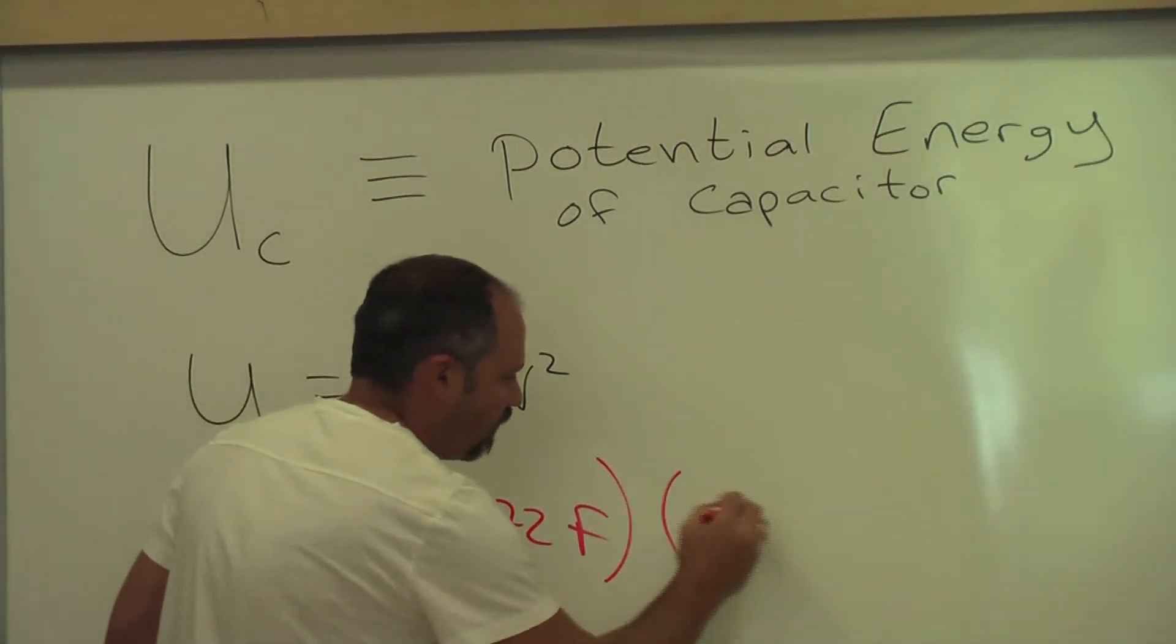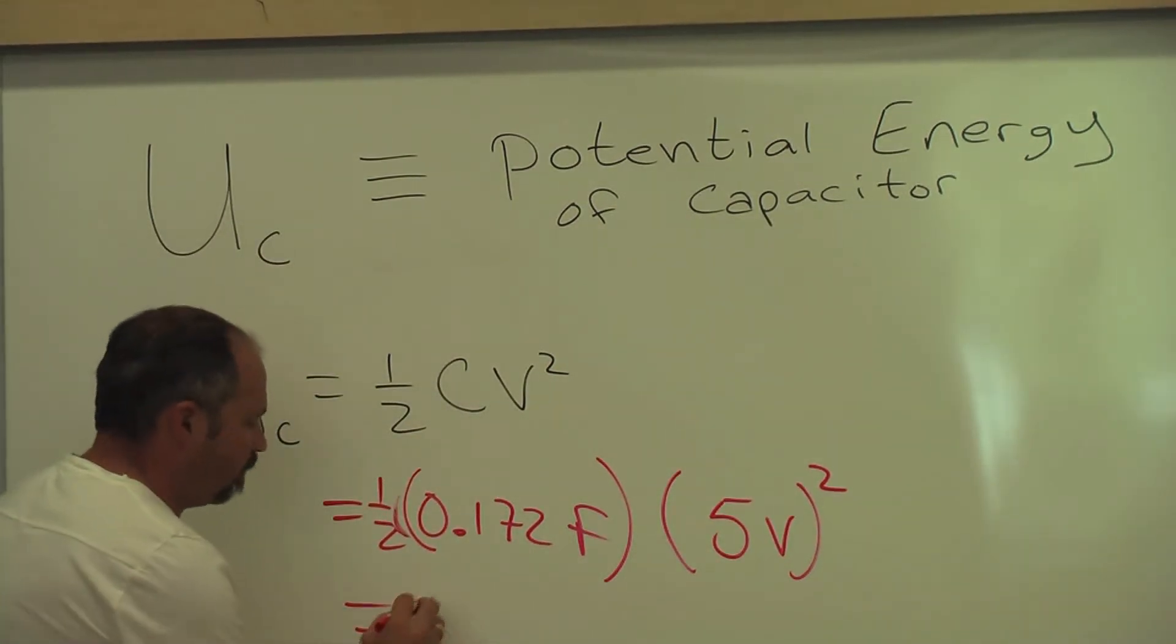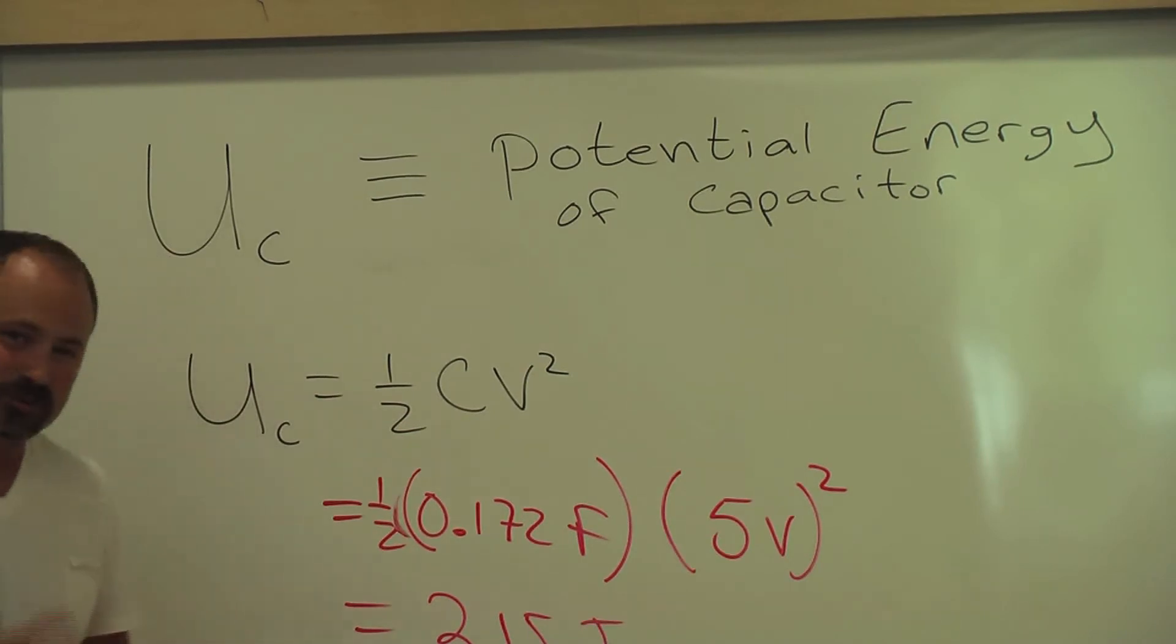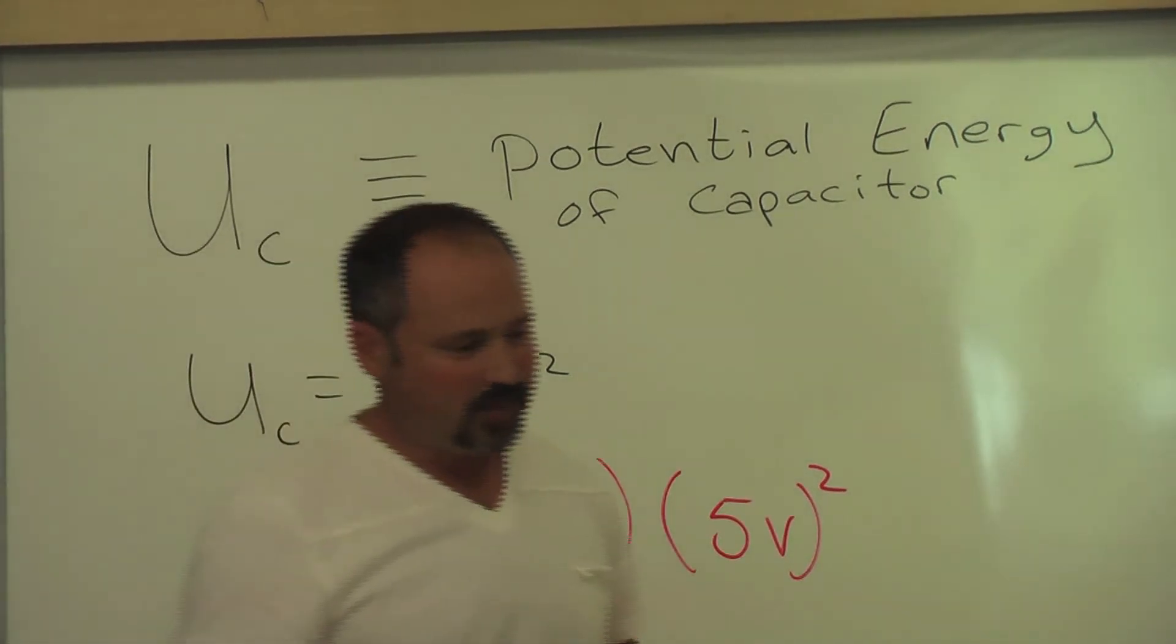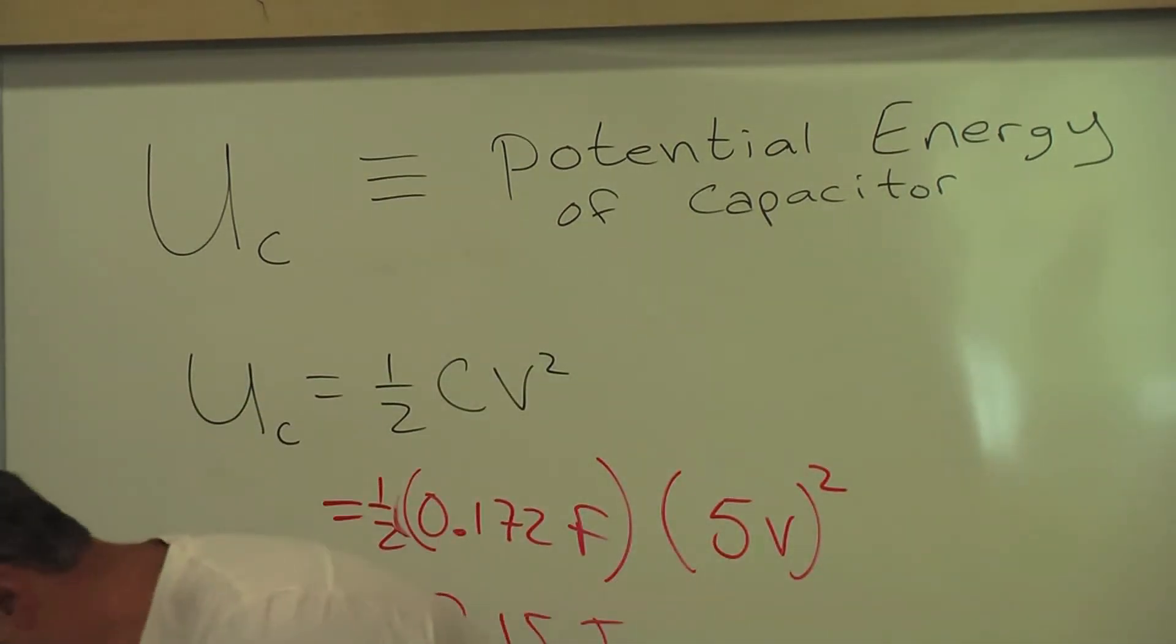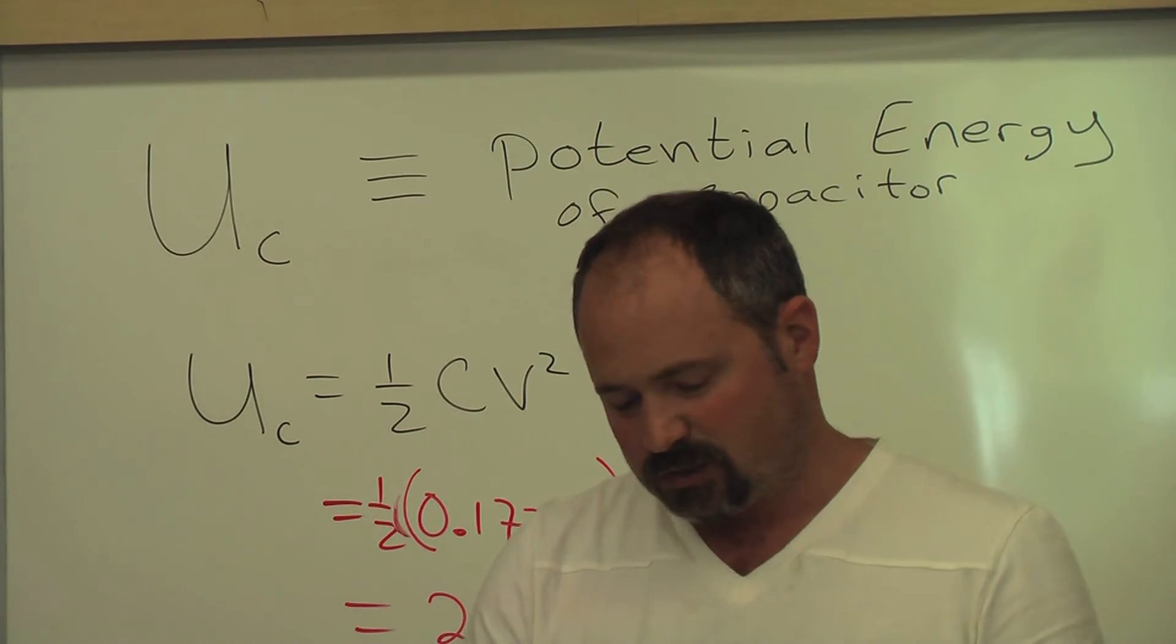Times the voltage squared. If you work all that out, you get 2.15 joules. So that's how much energy was being stored in the capacitor.